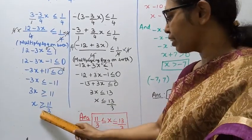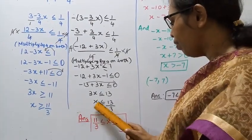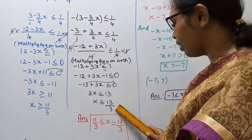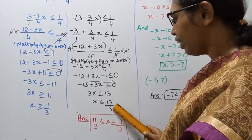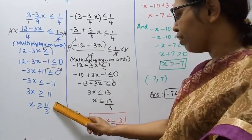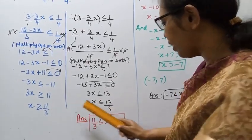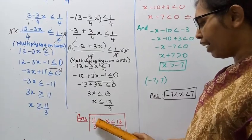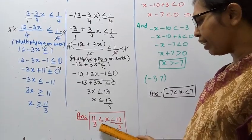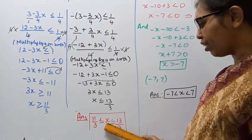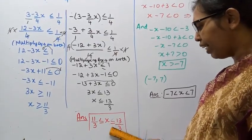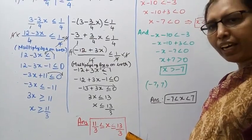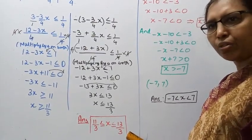Combining both cases: x is greater than or equal to 11/3 and x is less than or equal to 13/3. So x lies between 11/3 and 13/3, i.e., 11/3 ≤ x ≤ 13/3. That is the answer.